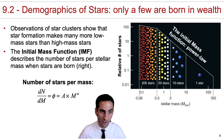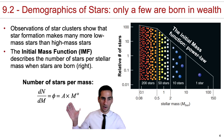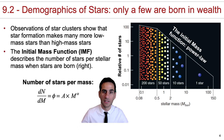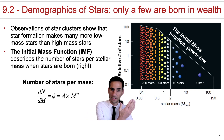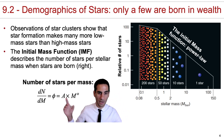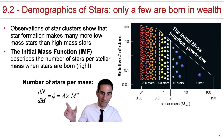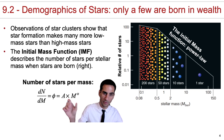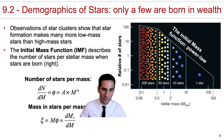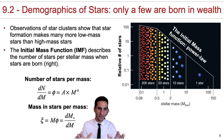The initial mass function describes the number of stars per stellar mass when stars are born. It can be given as a single power law with an exponent alpha. Sometimes the initial mass function can be described as a combination of two power laws, as shown in this figure — to reproduce it you would need two power laws, not a single one. For most applications in this course, you will focus on describing the relative number of stars per mass as a constant times mass to the power of alpha. Within the same framework, we can describe the amount of mass per mass by multiplying phi, our relative number of stars per mass, by mass, and we'll see in detail how to calculate these integrals and apply them in practice.